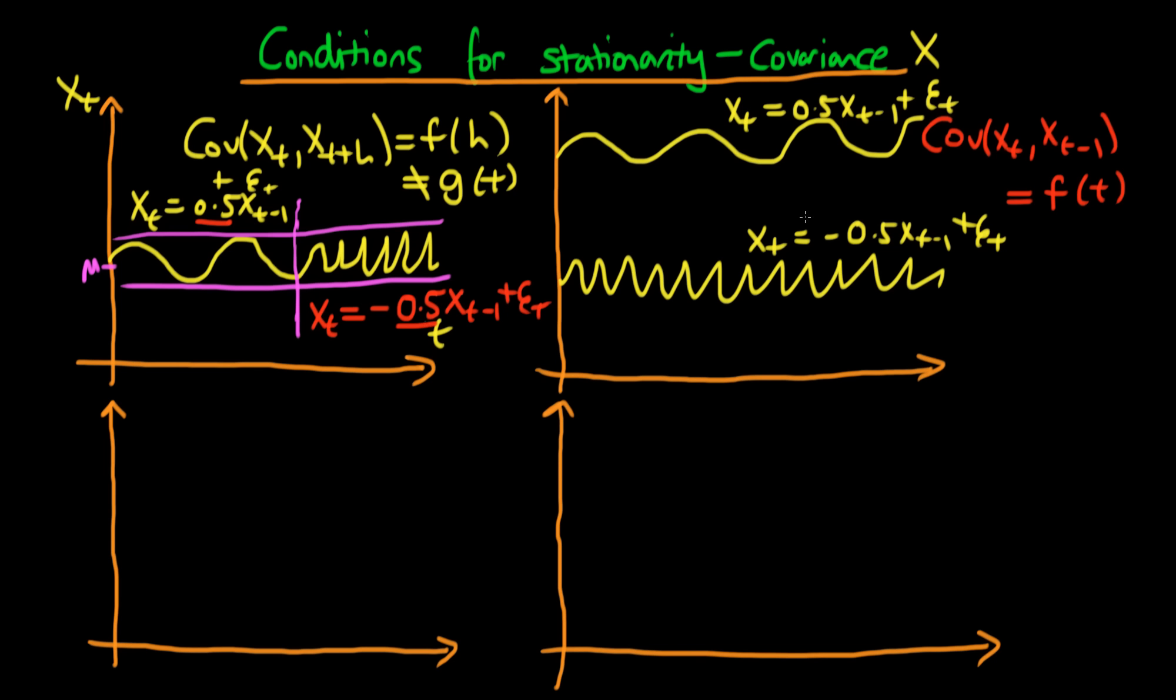So why do we actually care? Well let's think about it in regards to linear regression. Let's assume that we have a process which is variance, covariance, and mean stationary. So this is our yt and then we have some xt which looks something like the graph above.